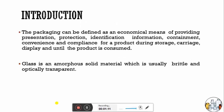Starting with introduction — packaging materials are economical means of providing presentation, protection, identification information, containment, convenience and compliance for a product during storage, carriage, display and until the product is consumed. For parenteral formulation there are mainly three types of packaging material: glass, plastic, and rubber. In this video we are mainly going to discuss about glass, its types and its properties.